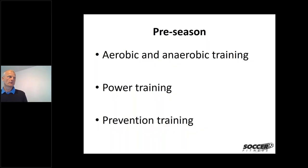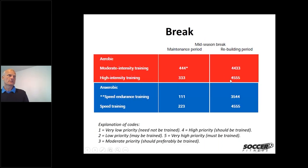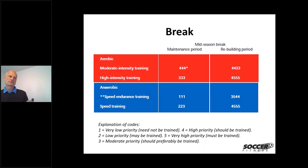The main training components are aerobic and anaerobic training, power training, and prevention and prehab. Starting with aerobic and anaerobic training: the most important element is aerobic high-intensity training. In the first week when players return to team training it should have a priority of four, rising to five — the highest priority — shortly after. Speed endurance training also gets high priority, but not in the first week because players are not accustomed to that level of intense work, so we must avoid overloading them.